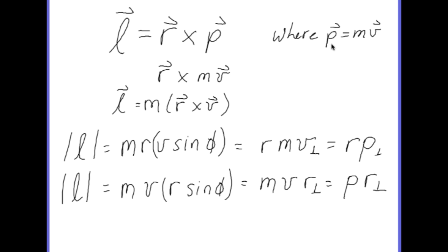And we know that momentum P is equal to mass times velocity. So we can rewrite this R cross P as R cross MV. And since M is a scalar, we can pull it outside of the cross product and say that the linear momentum of a particle is equal to mass times the cross product of R and V.